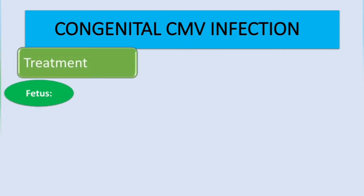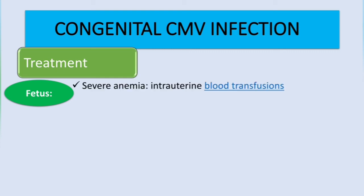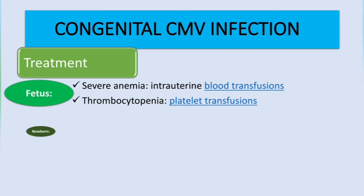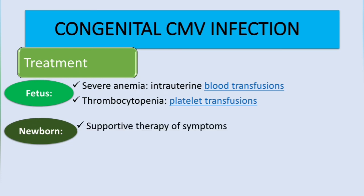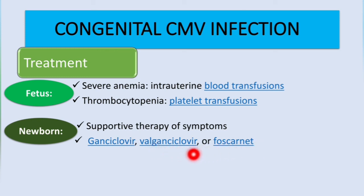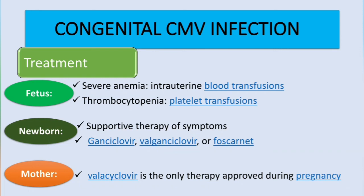For treatment, if the fetus has severe anemia, we can do intrauterine blood transfusions. If there is thrombocytopenia, platelet transfusions can be given. For the newborn, supportive therapy is provided, including electrolyte balance and management of seizures. Antiviral agents ganciclovir, valganciclovir, and foscarnet can be used. For the pregnant mother, the only approved drug is valacyclovir.